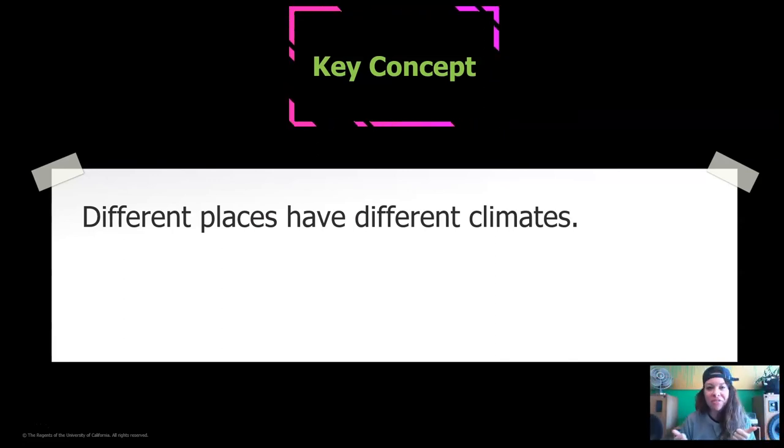Different places have different climates. I think we've figured that out together as we've studied all the different cities that we've looked at. We've looked at Anchorage, Alaska, St. Petersburg, Russia, Akumal, Mexico, Dakar, Senegal. You may have looked at a different place in the World Weather Handbook. Different places have different climates. It's not the same all over the world.